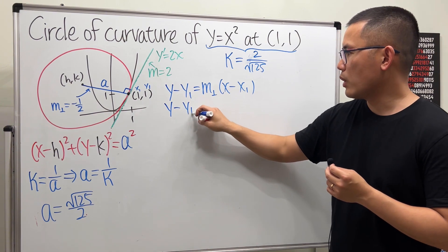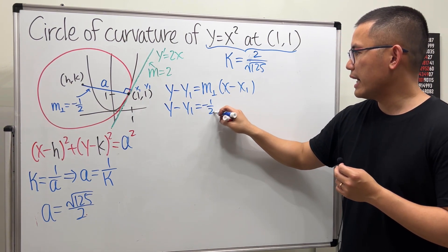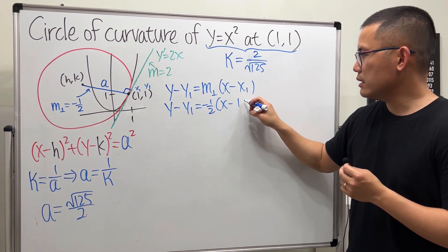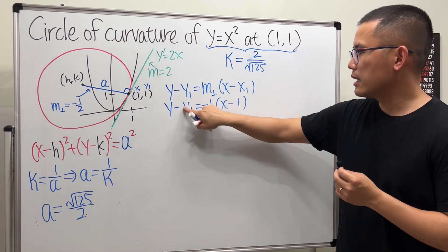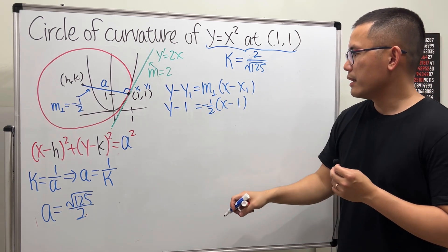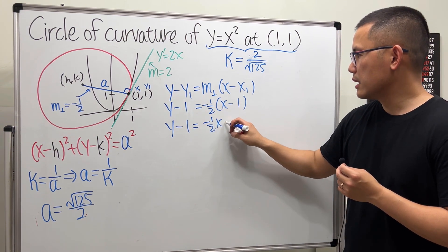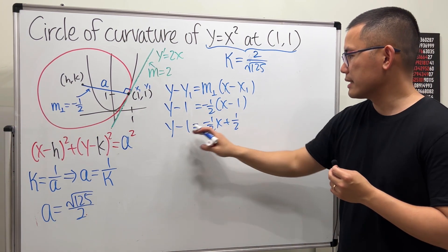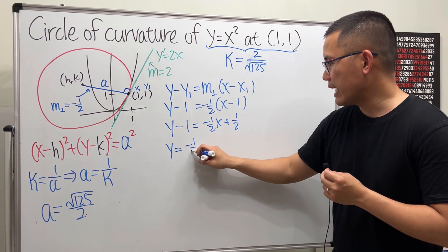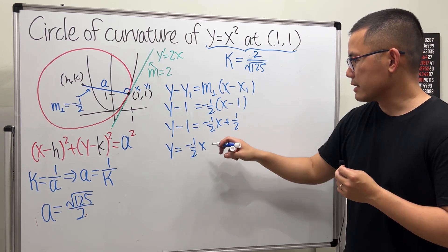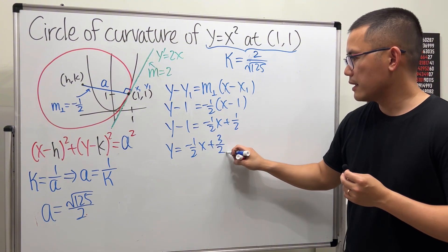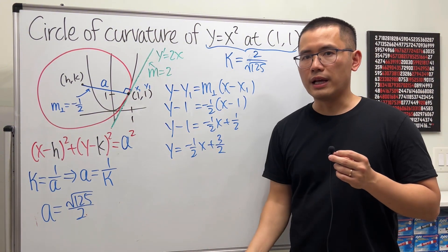So y - y₁ equals negative 1/2(x - 1). y₁ is 1. And then just work this out. So y - 1 equals negative 1/2 x plus 1/2, and then plus 1 on both sides. y equals negative 1/2 x, 1/2 plus 1, that's 3/2. So this is the equation for the blue line.